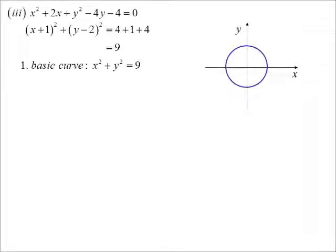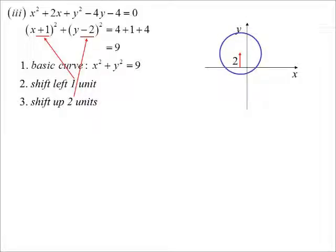Now on the right-hand side I've moved the 4 over, but then I've got to add the squares. So 1 squared is 1, negative 2 squared is 4, we end up with 9 on that one. So I've got x plus 1 squared plus y minus 2 squared is equal to 9. So my basic curve is the circle x squared plus y squared equals 9. I've shifted that left one unit and then I've shifted it up two units. And so there's our circle.